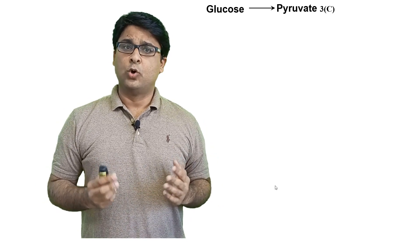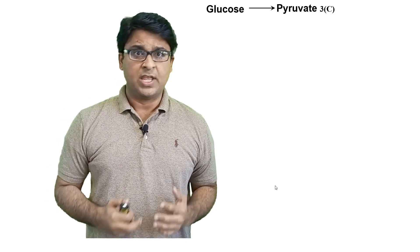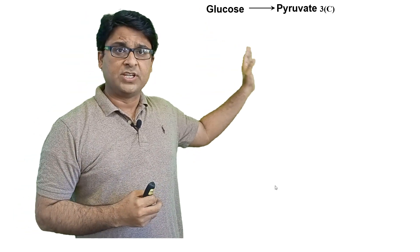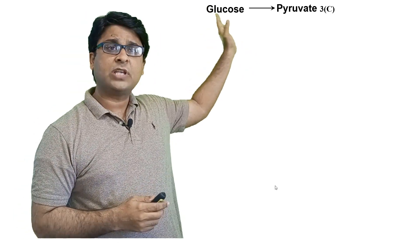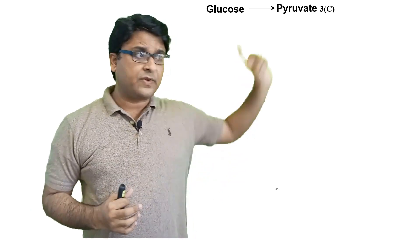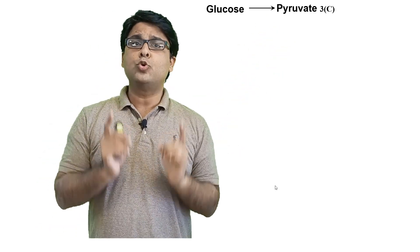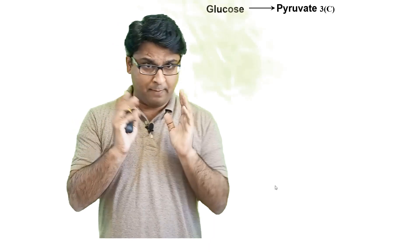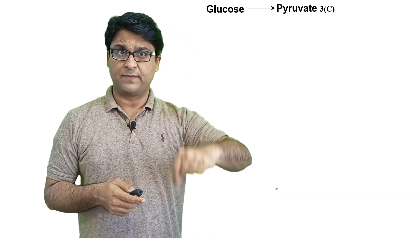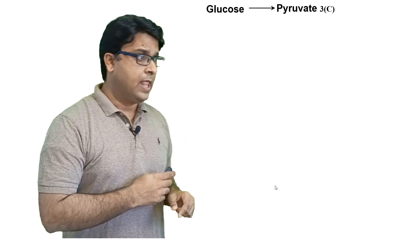In the previous video we discussed in detail about glycolysis and we learned that in the glycolysis process glucose is converted into pyruvate. Pyruvate is a three carbon compound and as a result of glycolysis two molecules of pyruvate were produced. I have given the link of my glycolysis video in the description box, so do watch that video as well.